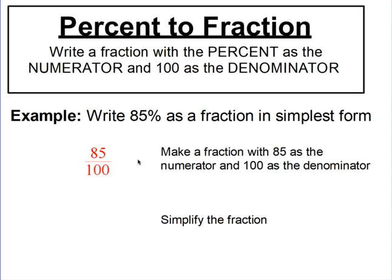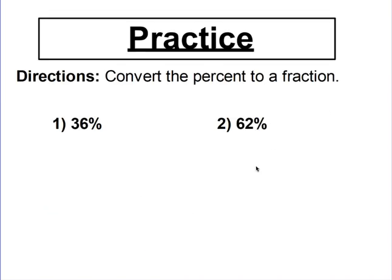To simplify this fraction, we can divide by 5. 85 divided by 5 is 17, and 100 divided by 5 is 20, so our simplified fraction is 17 over 20. Now pause and write fractions out of two percents and simplify them if possible.